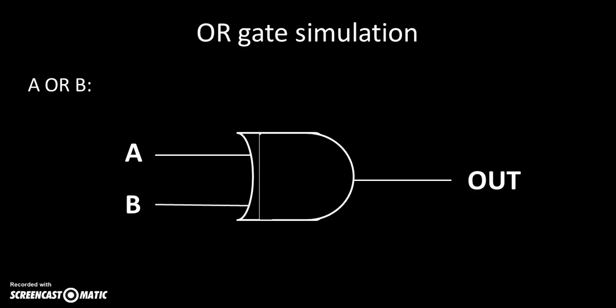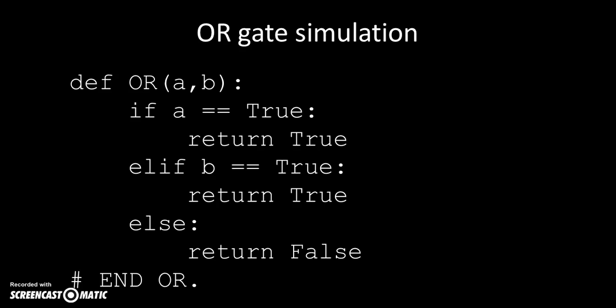The OR gate: if either A or B, or both A and B are true, we return true. Otherwise we'll return false if they're both false. One way of doing it is to create a function with two parameters: if A is true then return true, elif B is true then return true, otherwise return false. The only time we return false is if both A and B are false.